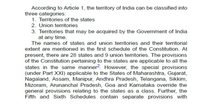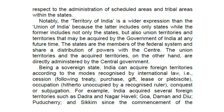The provisions of the Constitution pertaining to the states are applicable to all the states in the same manner. However, special provisions under Part 21 are applicable to the states of Maharashtra, Gujarat, Nagaland, Assam, Manipur, Andhra Pradesh, Telangana, Sikkim, Mizoram, Arunachal Pradesh, Goa and Karnataka. Further, the 5th and 6th schedules contain separate provisions for the administration of scheduled areas and tribal areas within the states. Notably, the territory of India is a wider expression than the Union of India, as the latter includes only states while the former includes states, union territories, and territories that may be acquired.